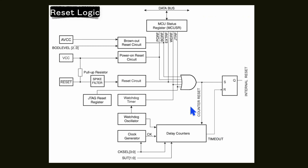There are mainly five types of reset that we can perform on any microcontroller. The first one is the brownout reset circuit. It basically monitors the voltage level being supplied. If the voltage level falls below a certain limit, this circuit will detect it and perform a reset on the microcontroller.